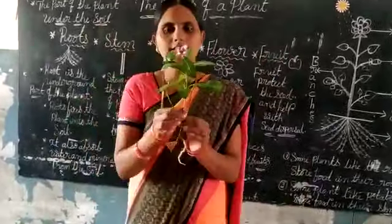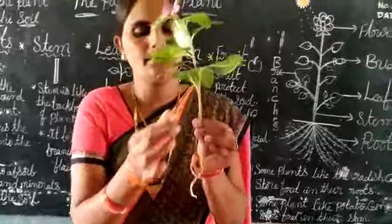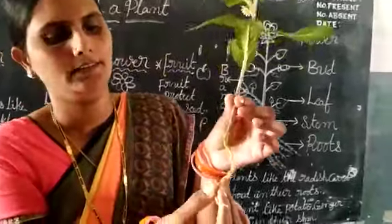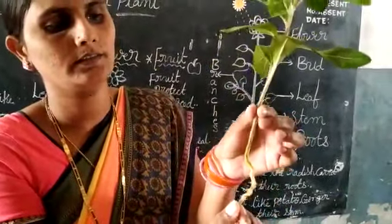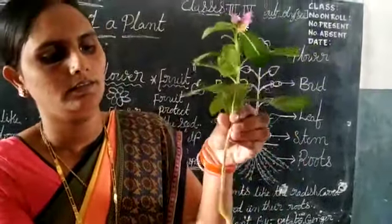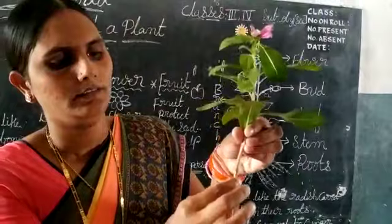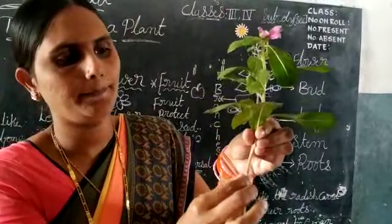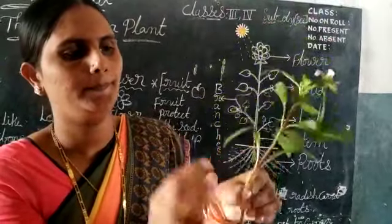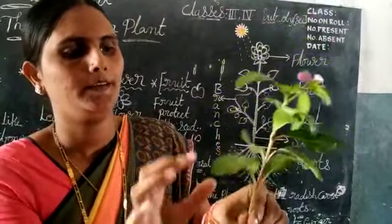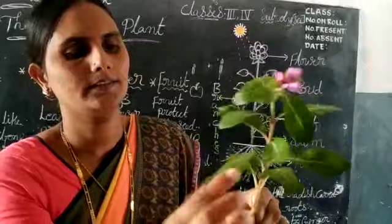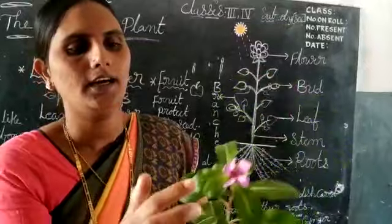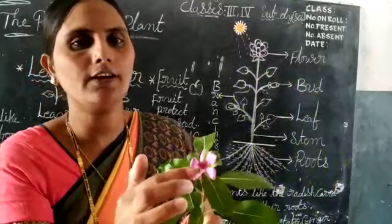Children, this is a plant. These are roots. This is a stem. These are leaves. And this is a flower.